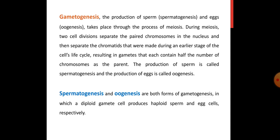In mitosis, every daughter cell is very similar to that of the parent. Just as the parent cell has 2N number of chromosomes, daughter cells also contain 2N number of chromosomes and are exactly similar to the parent cell. Whereas in meiotic division, the cell that starts meiotic division contains 2N number of chromosomes, that is it is diploid, and when sperms or eggs are being formed, we see that the chromosomes are halved. So due to meiotic division, the 2N number of cells are converted into N number of daughter cells.